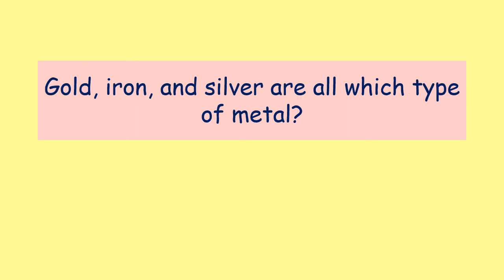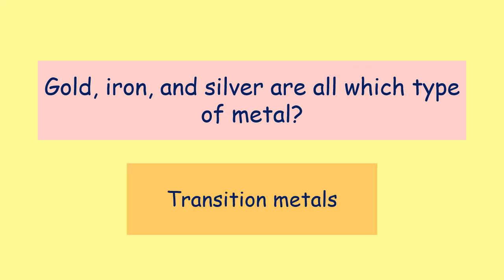Final question: gold, iron, and silver would all be described as what type of metal? They are transition metals. That covers elements and the periodic table. If you struggled with any of those questions, watch the video back and have another practice. Your summary notes also contain more information on the periodic table and those four groups you need to know about, so make sure you use them. See you next time.